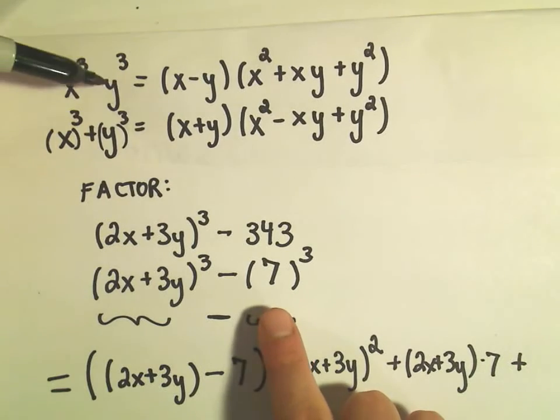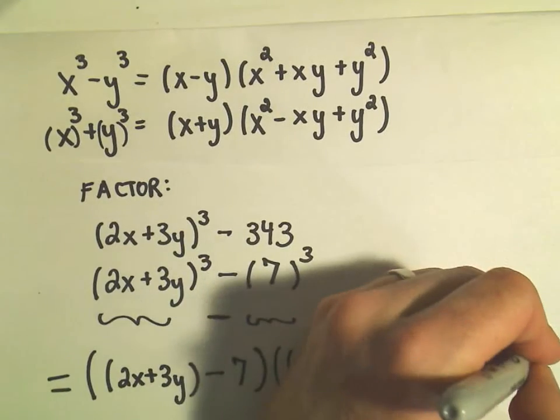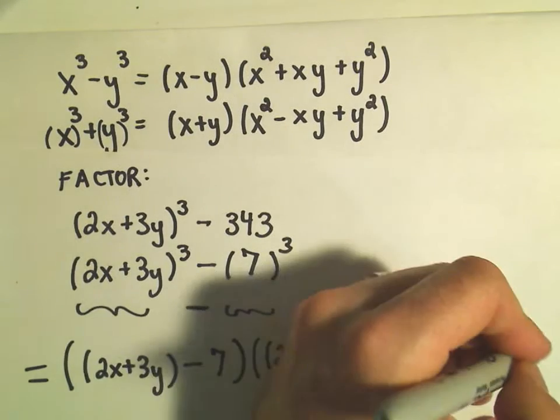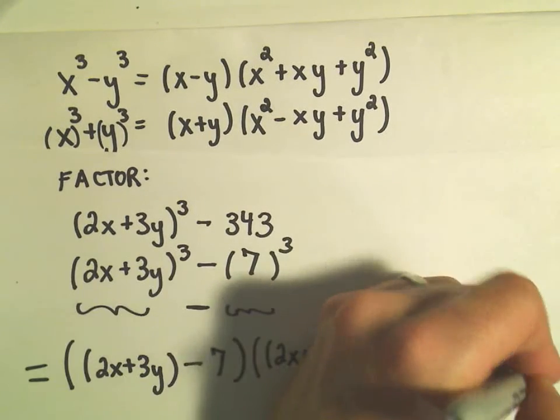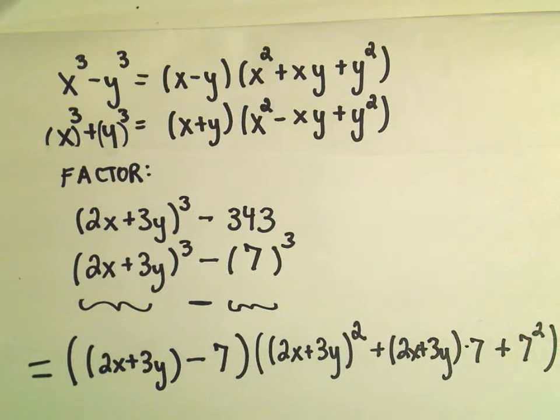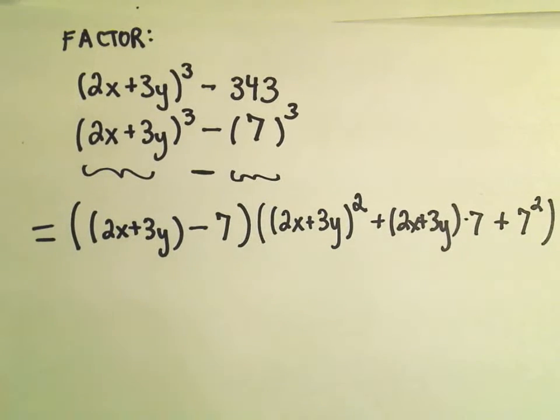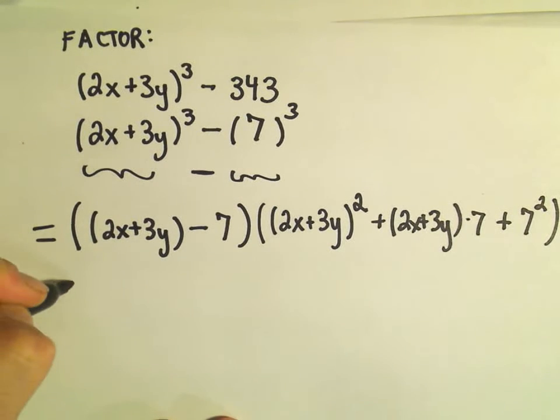And then we write another plus sign. And it says whatever was being cubed, this time we just simply square it. So we'll write down 7 squared. Alright, a little tedious, but this is now factored. We could always rewrite it a little bit, but there's probably not a lot of simplification to do in this case.